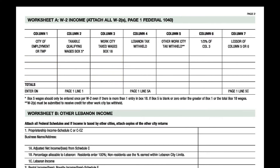If you have Lebanon withholdings in addition to work city taxes in boxes 18 to 20, do not enter them as a separate line item on the worksheet. They are entered in column 4 of Worksheet A with the first line of that employer used for this particular W-2.